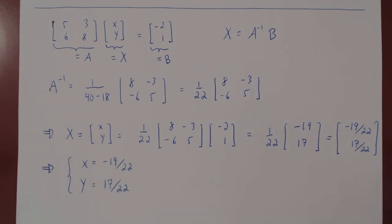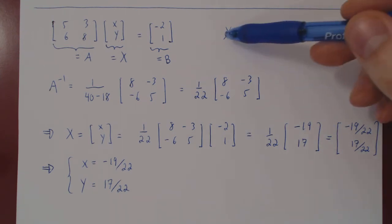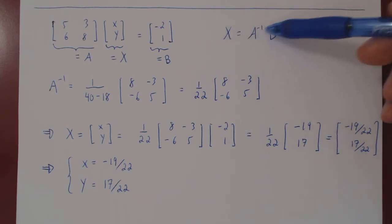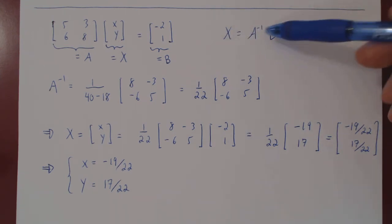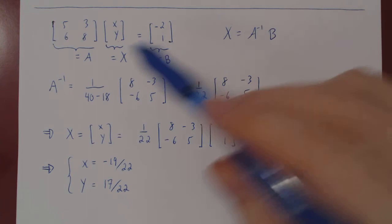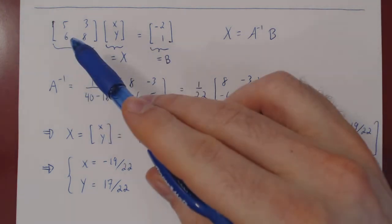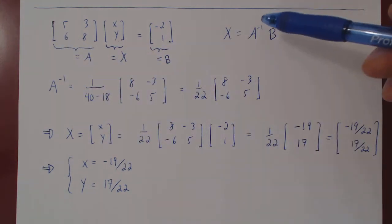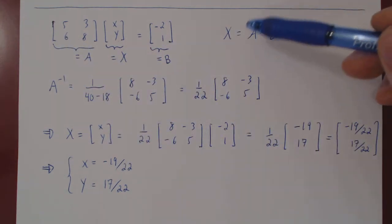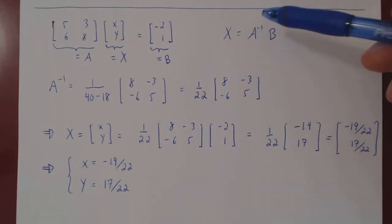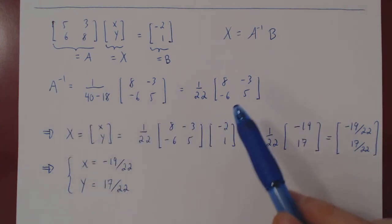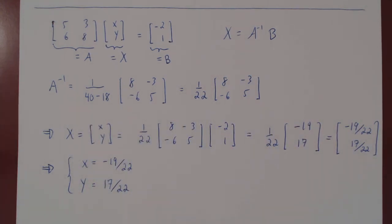That's it. For a larger square matrix, x would still equal A inverse times b, as long as A is an invertible square matrix. The only difference is you wouldn't use the shortcut formula — you would find A inverse using row reduction instead.